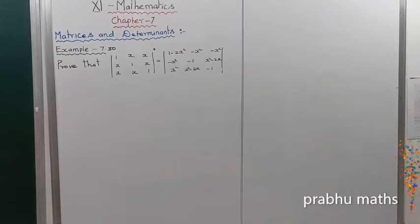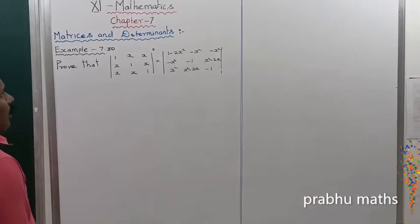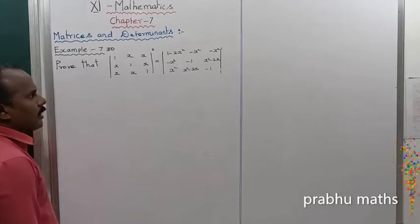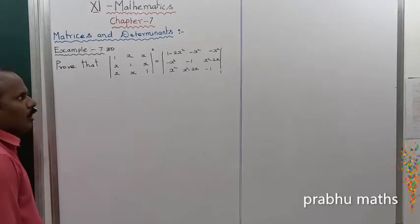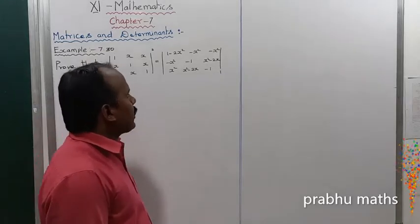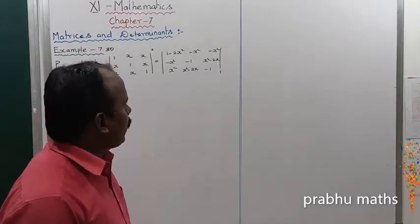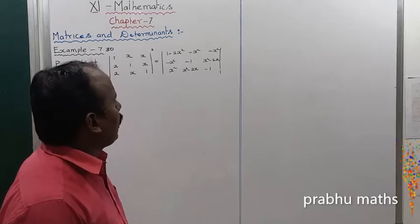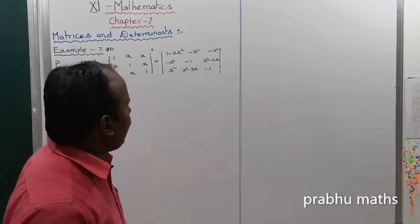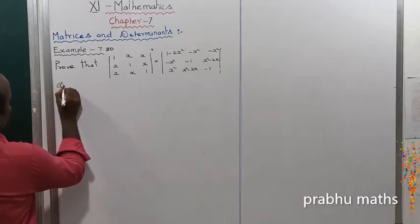Example 7.30: Proof that the determinant of the matrix [1,x,x; x,1,x; x,x,1] whole square is equal to x squared minus 2x minus 1. Proof solution.